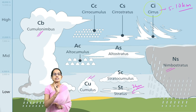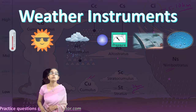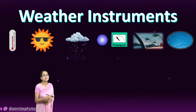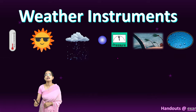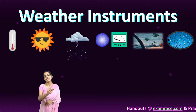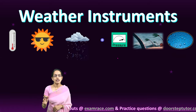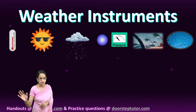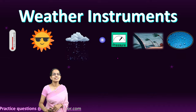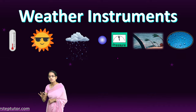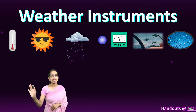Having understood the seven elements of weather, let's now talk about weather instruments. Weather instruments are used to collect data about changing weather. To summarize, temperature is measured through a thermometer, sunshine through sundials, rainfall through a rain gauge, pressure through barometers, wind direction through a wind vane, wind speed through an anemometer, and humidity through the wet and dry bulb thermometer.